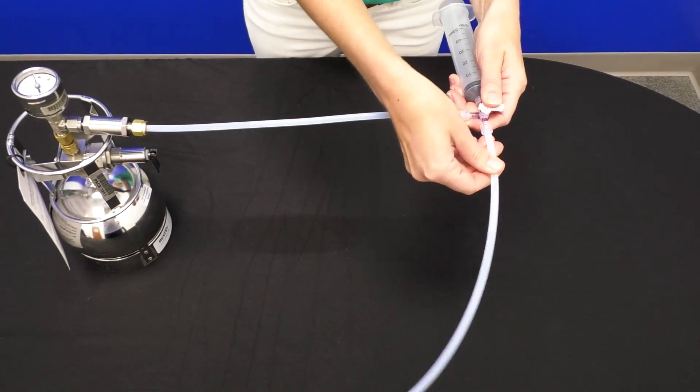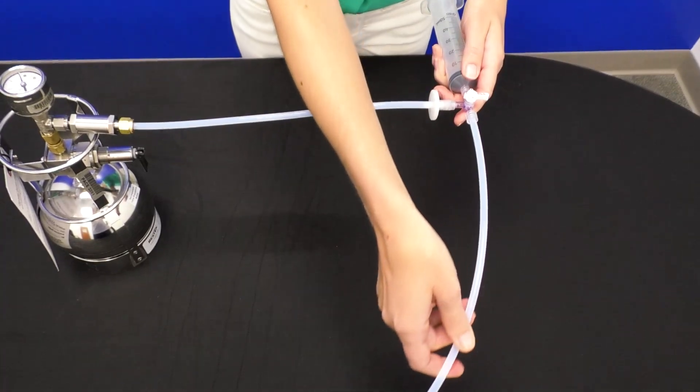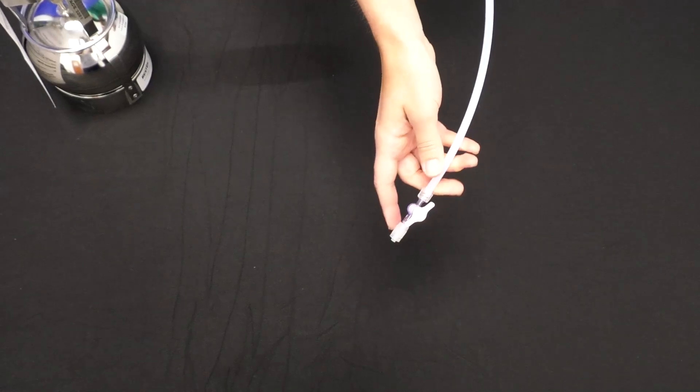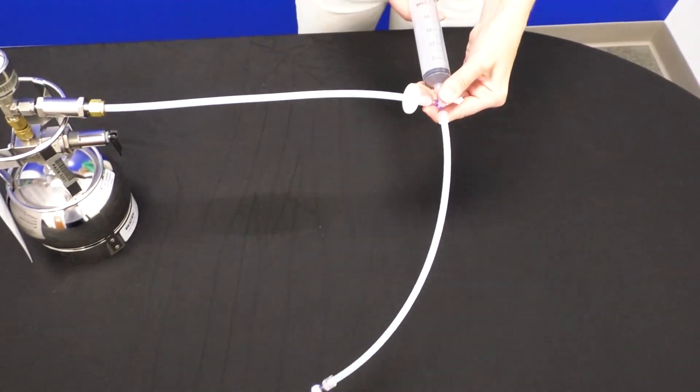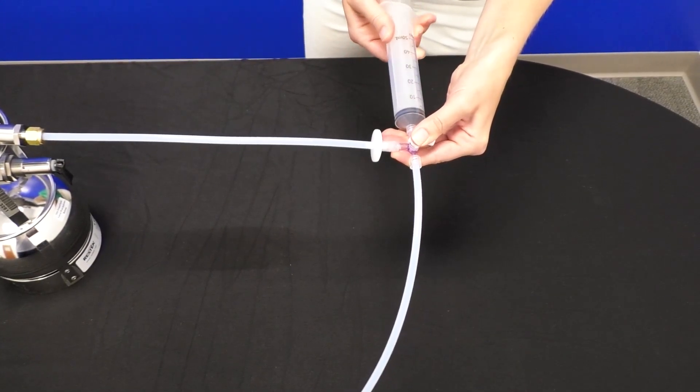Then you'll attach the tube, screw the tubing into the bottom of the four-way valve. And then the other end, you have your two-way valve and then the other male slip adapter. At the top here is where you connect your syringe. You can see that it's just screwed in to the top.